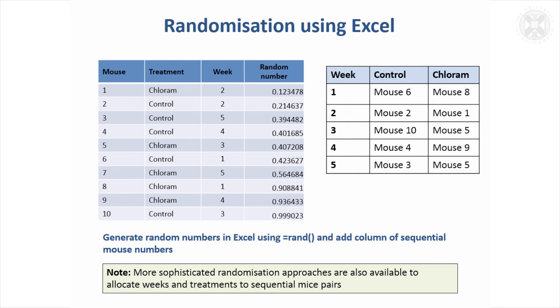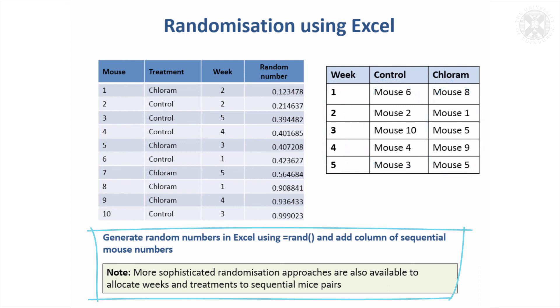So that would then get called a randomised block design. It's a bit like the two-level design, except the second factor isn't of interest to us — we just want to make sure it doesn't affect the results.